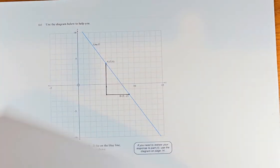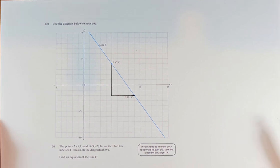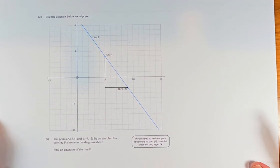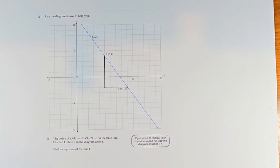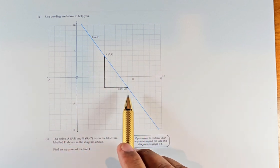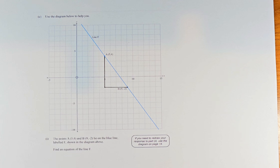This should be an easy question because it's an achieved question. The question says: Use the diagram below to help you. We have two points: A is (5,4) and B is (9,-2). The points A(5,4) and B(9,-2) lie on the blue line, labeled F, shown in the diagram above. Find the equation of the line F.